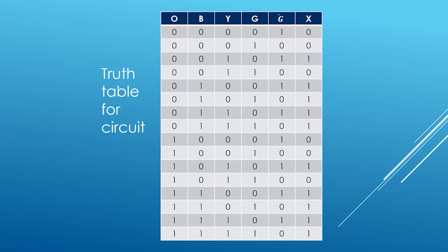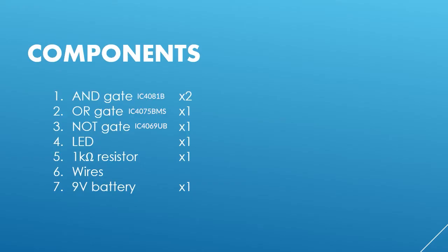This is the truth table for our circuit. The components used in the circuit are 2 AND gates, 1 OR gate, 1 NOT gate, 1 LED, 1 1kΩ resistor, wires, and 1 9V battery.